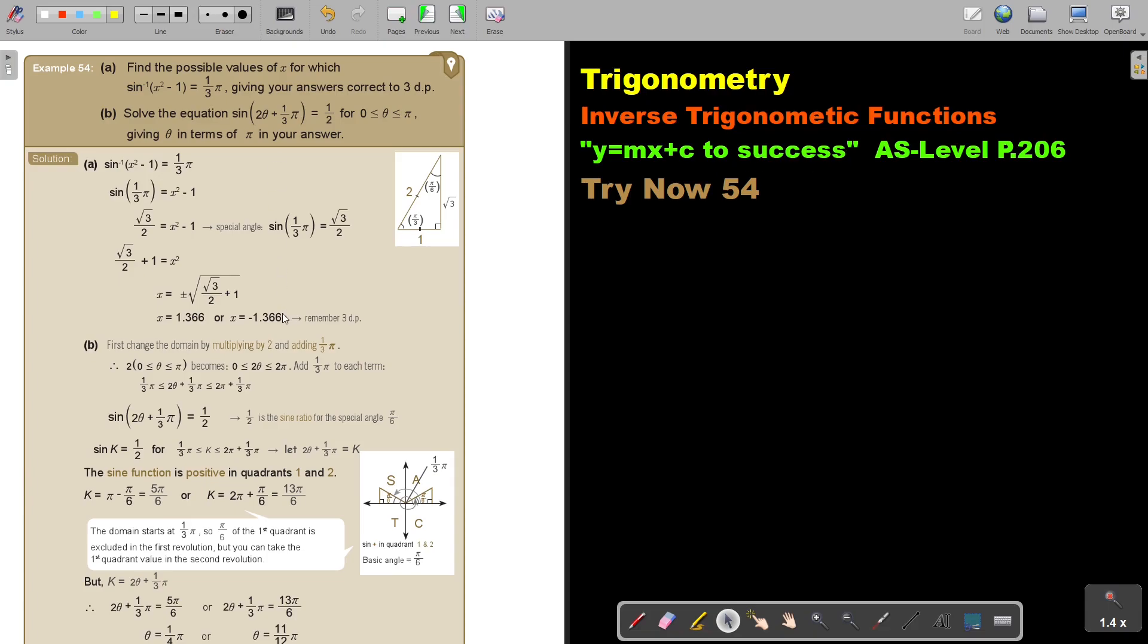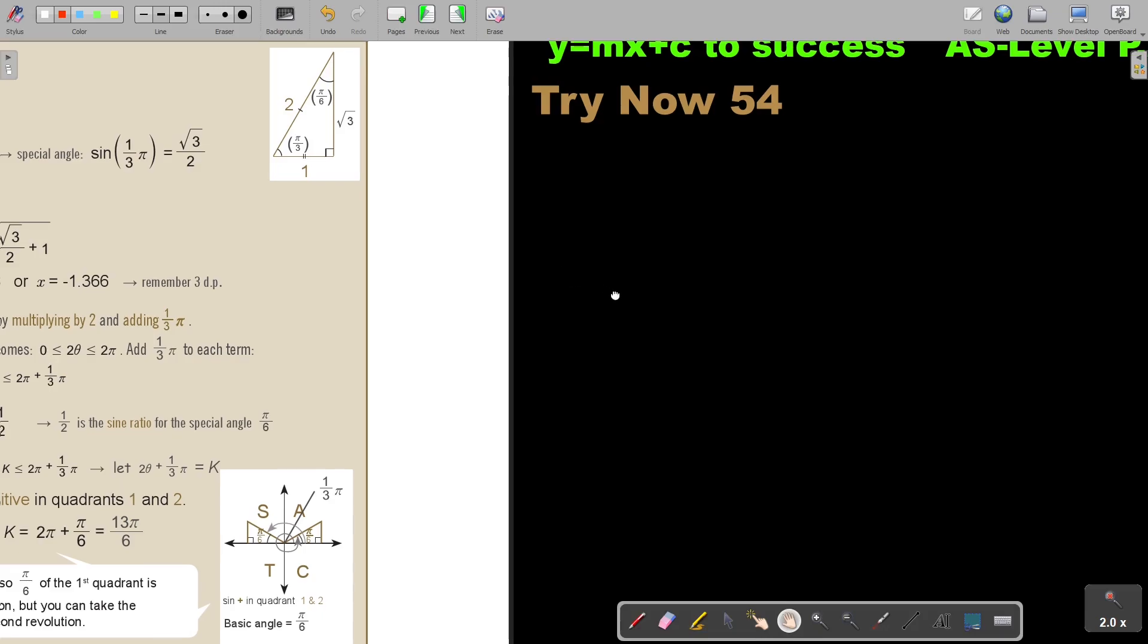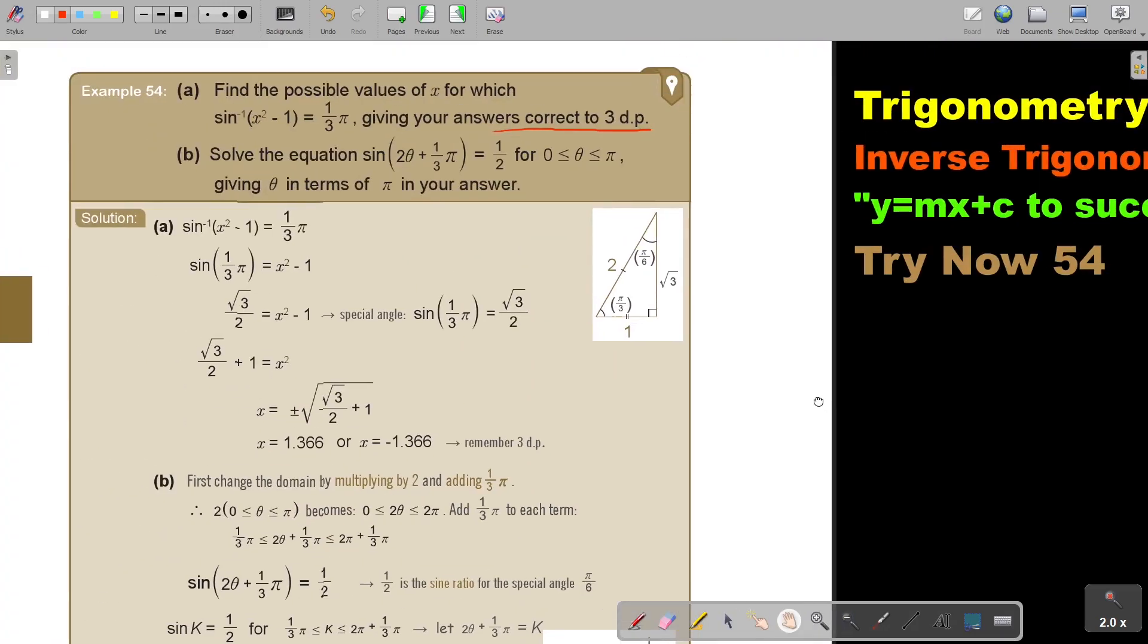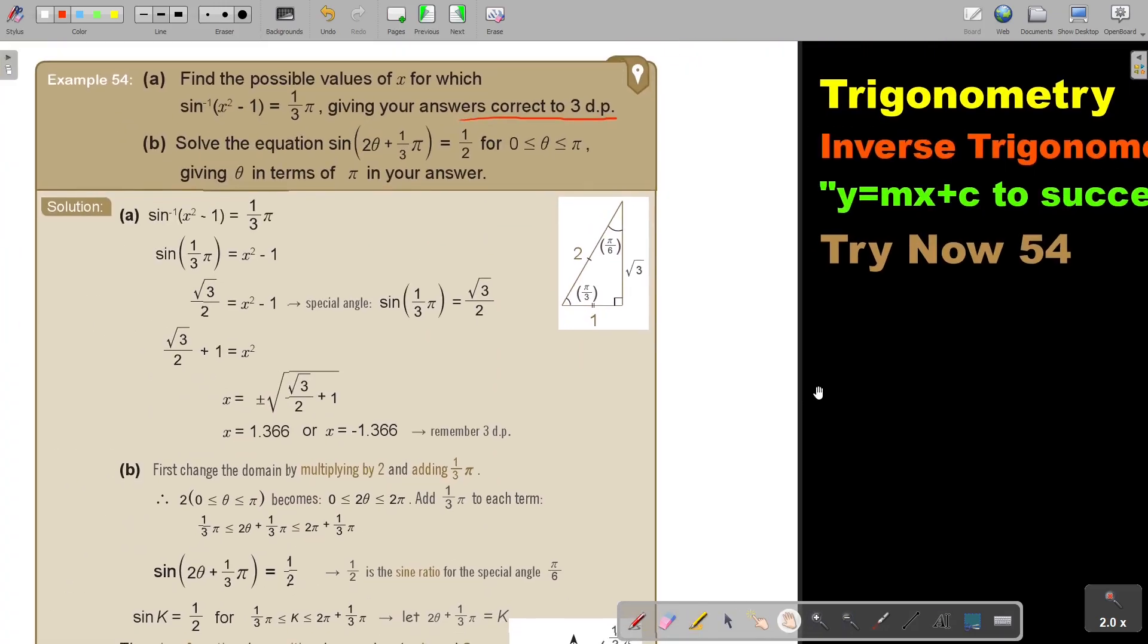Let's look at another example. Find the possible values of x for which sin inverse of x squared minus 1 is equal to a third pi, giving your answers correct to three decimal places. Let's start.